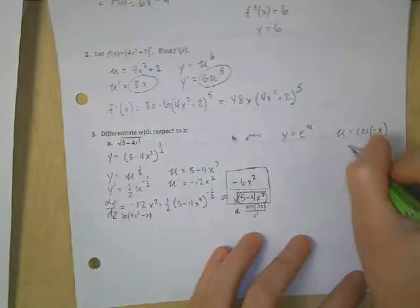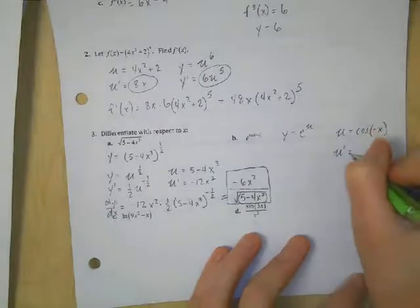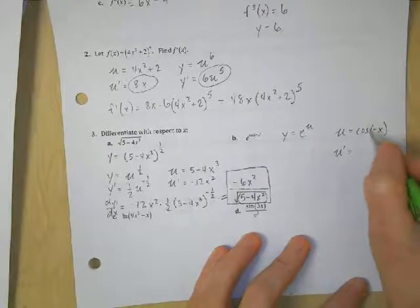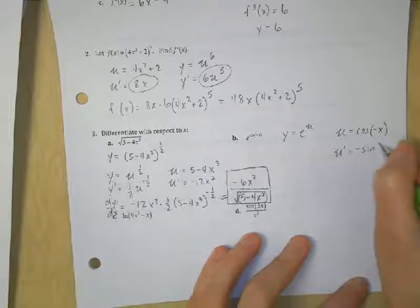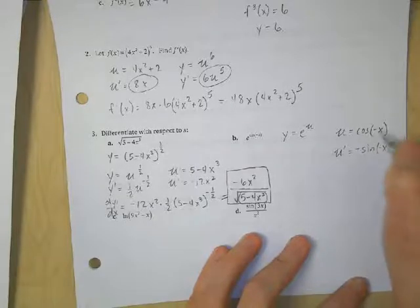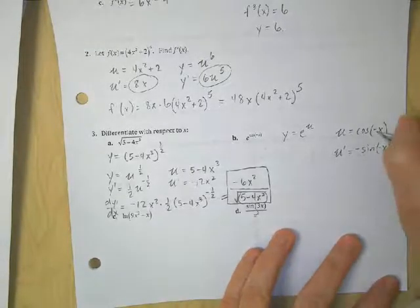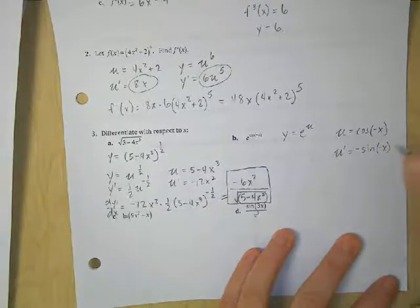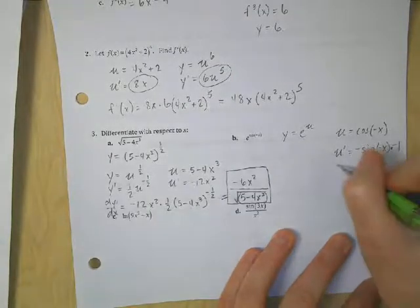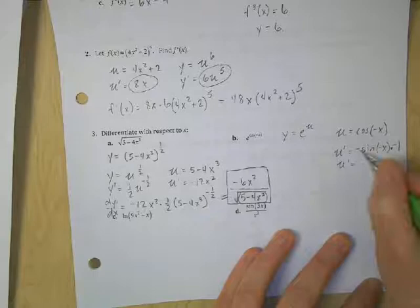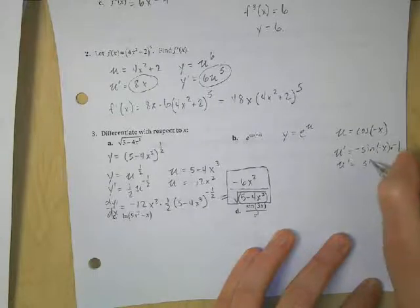So when I do the derivative of u, it's going to be the derivative of cosine is negative sine of negative x times the derivative of negative x. So the derivative of negative x is negative 1. So therefore, this is a negative times the negative gives me a positive. So I end up with sine of negative x.